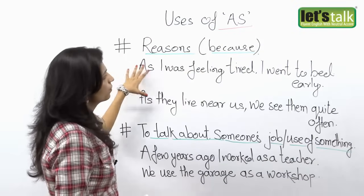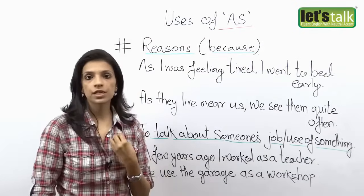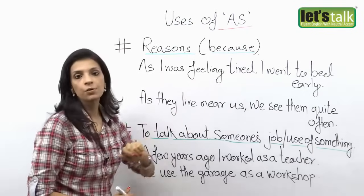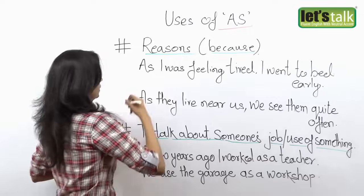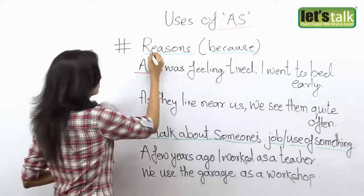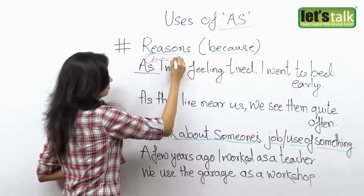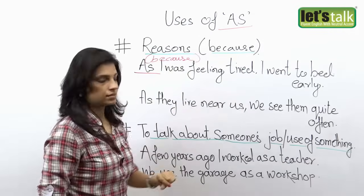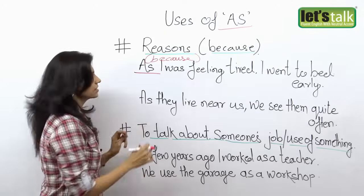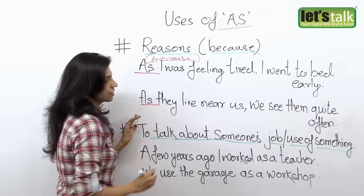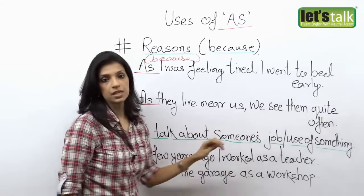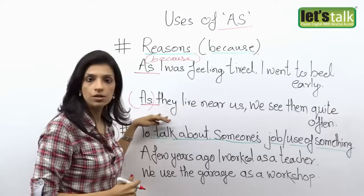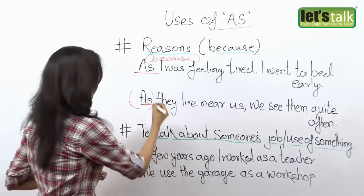We use 'as' when you want to say 'because' or give reasons. For example: 'As I was feeling tired, I went to bed early' — meaning because I was feeling tired, I went to bed early. In my next sentence: 'As they live near us, we see them quite often.' So you're giving a reason — 'as they live near us' or 'because they live near us, we see them quite often'.